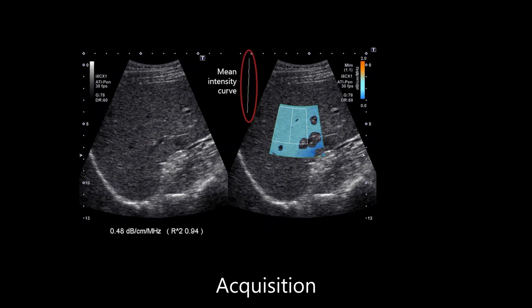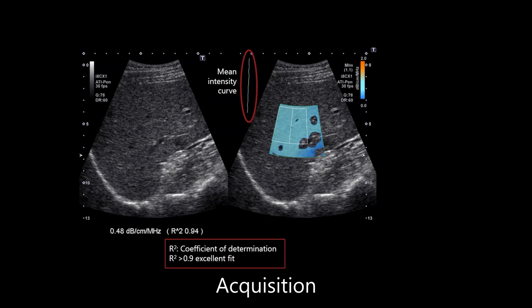The mean intensity curve is the average intensity along the depth direction within the measurement ROI, and is used to calculate the attenuation coefficient displayed at the bottom in units of dB per centimeter megahertz. The quality of your acquisition is important to provide diagnostic confidence. Quality can be confirmed via the coefficient of determination, or R-squared value.